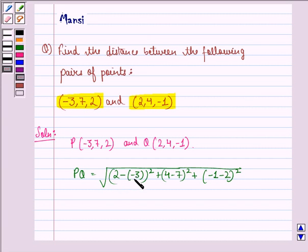Now, 2 minus -3 is same as 2 plus 3, so it is equal to square root of (2 plus 3) whole square, plus 4 minus 7 is -3, so (-3) square, plus -1 minus 2 is again -3, so (-3) whole square.